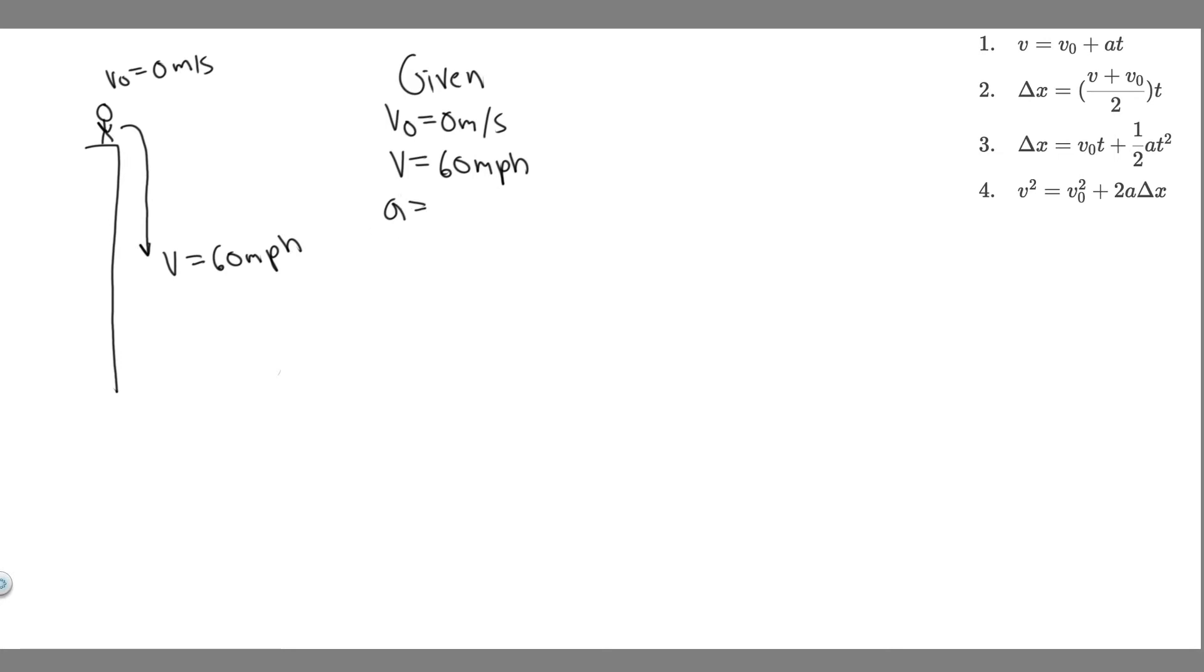minus 9.8 meters per second squared. And the reason this is, is because this is just going to be the acceleration due to gravity. This is just their freefall, just acceleration due to gravity on Earth, and it's negative because they're going downwards. The force is downwards, or the acceleration is downwards.